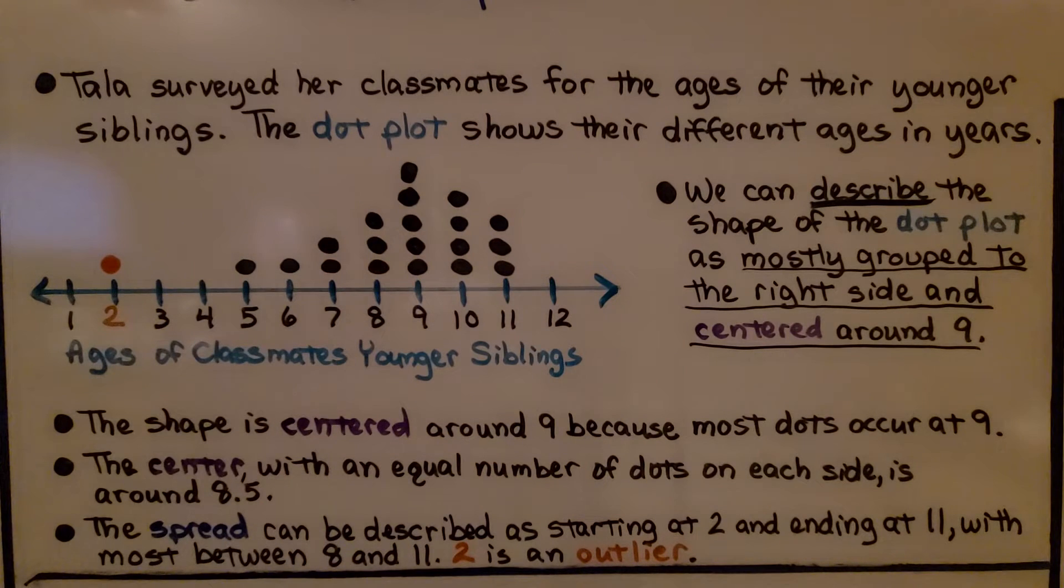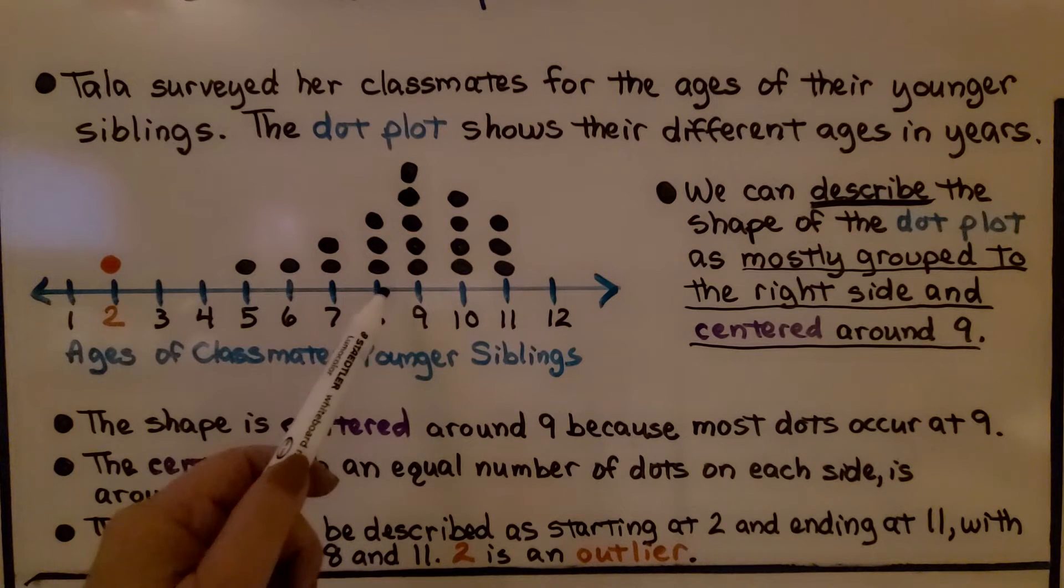The shape is centered around 9 because most dots occur at 9. The center, with an equal number of dots on each side, is actually around 8 and 5 tenths, 8 and a half. It would be around here.